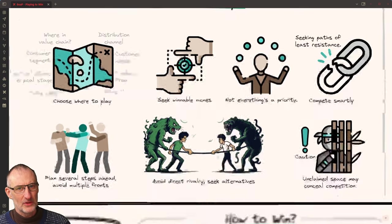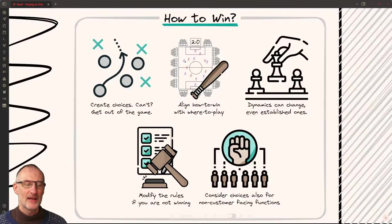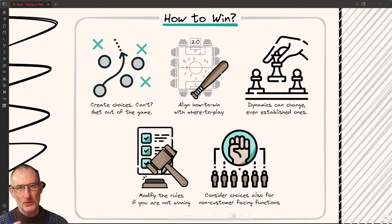Once you know where you want to play you need to think about how you want to win. And you need to create choices and we'll talk about these choices later on in the reverse engineering as we talk about that in a couple of minutes. If you're not able to create winning choices then you should get out of that game and look for another game. Also as you think about how to win you need to align it with where to play.